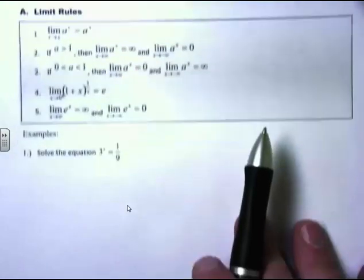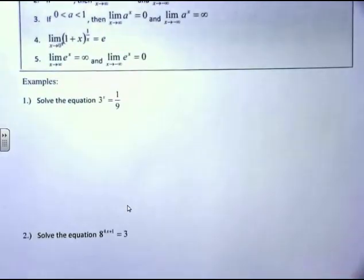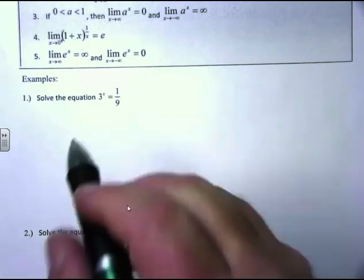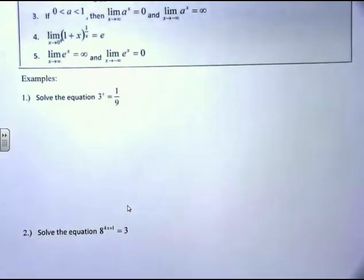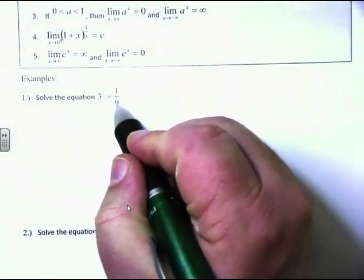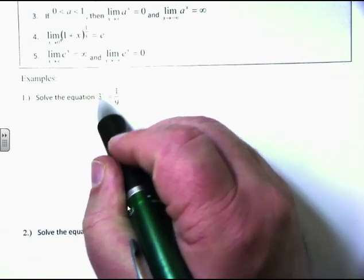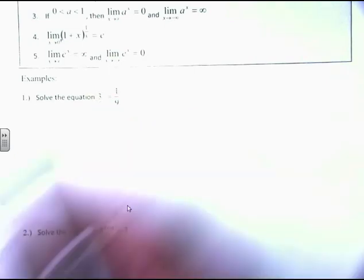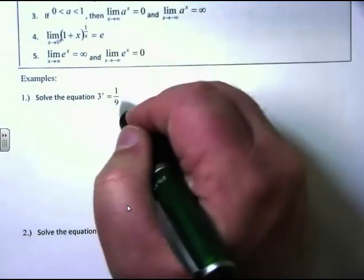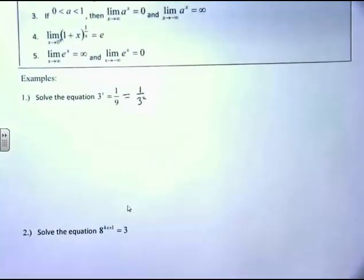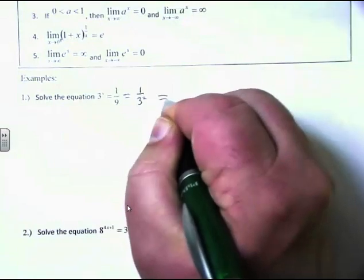Let's practice a few problems similar to what's on your quiz. First problem: solve the equation 3 to the x equals 1/9. This is simpler because you can rewrite both sides in the same base. Since 9 is 3 squared, 1/9 is 1 over 3 squared. I don't like things on the bottom, so I can rewrite that using exponential rules — bringing it to the top makes the exponent negative.